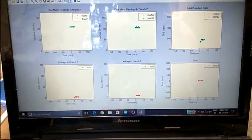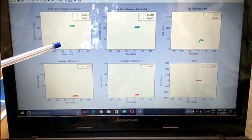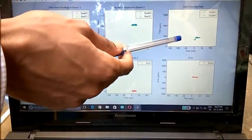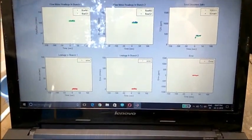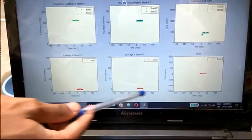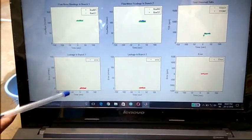We have interfaced the Arduino with MATLAB. The first one shows the leak in branch 1. The second one shows the leak in branch 2. And the third one shows if there is any kind of mixing in the branches. So the readings, the error shown here is 0. In all the branches we can see here it is 0.